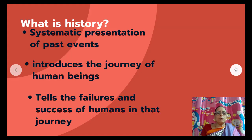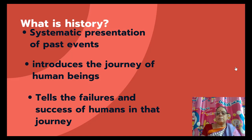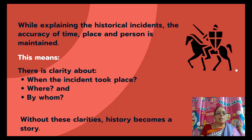Now you should learn about the meaning of history. What is history? Systematic presentation of past events is called history. It introduces the journey of human beings from ancient times to the present day. It tells the failures and successes of humans in that journey. While explaining historical incidents, the accuracy of time, place and person is maintained.